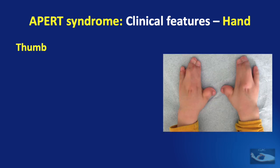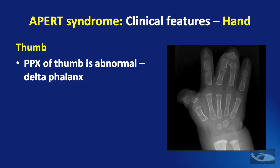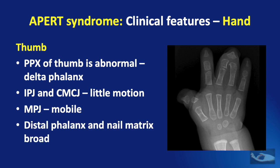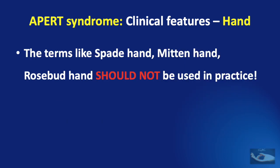The appearance of the thumb is also characteristic in the Apert syndrome hand. The proximal phalanx of the thumb is abnormal and triangular-shaped — it is known as a delta phalanx. The interphalangeal joint and the carpometacarpal joint have very little movement, while the metacarpophalangeal joint is usually mobile. With skeletal maturity the interphalangeal joint fuses. The distal phalanx and nail matrix are broad. An important point: the terms spade hand, mitten hand, and rosebud hand should not be used in practice — they are mentioned here only to illustrate what each type looks like.